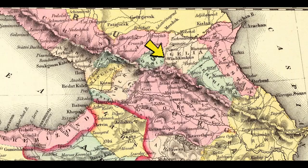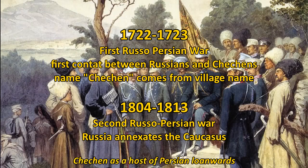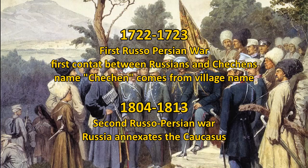In the early 1700s we had the first Russo-Persian War, which was also the first contact between Russia and the Chechens. The name Chechen itself — different from Norti, which is how the Chechens call themselves — comes from a village name in Chechnya where the Russians first met the Chechens. In the early 1800s, the second Russo-Persian War saw Russia incorporate the entire Caucasus region, and from then on the Chechens became part of Russia.